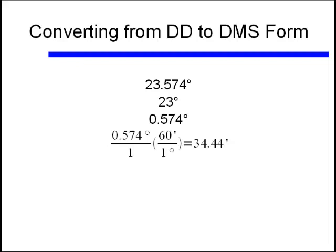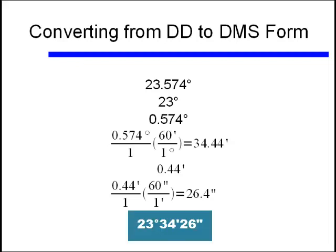So now we have our 34 minutes, but now we have the additional fraction of 0.44 minutes to convert into seconds. Again, we'll do that using the conversion, 60 seconds divided by 1 minute, and we get 26.4 seconds. Putting that all together, we find that 23.574 degrees is equal to approximately 23 degrees, 34 minutes, and 26 seconds.